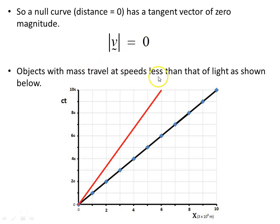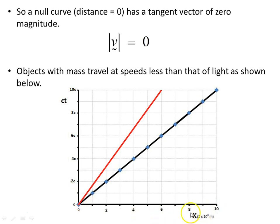Objects with mass travel at speeds less than that of light, as shown by the red line. Light is the blue-black line from earlier. The red line represents an object moving at constant speed in Minkowski spacetime but with mass, so it's moving at less than the speed of light. If you look at x over ct, the gradient of that line will be less than 1 — less than the speed of light. The black line represents the speed of light.